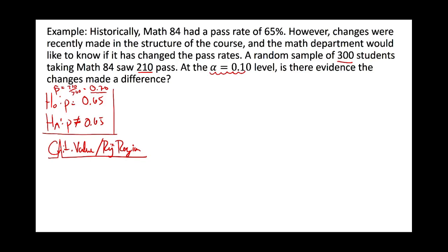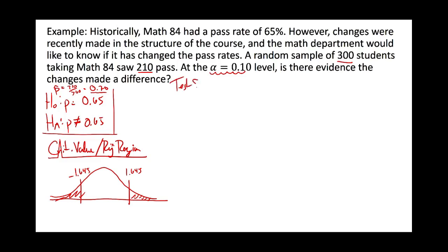On a two-tailed test there are plus-or-minus values because you care if the statistic gets too big or too small, so there's a positive rejection region and a negative rejection region. Those are our cutoffs — the rejection region is in the tails on either side, and if our test statistic goes past those cutoffs in either direction, we reject.